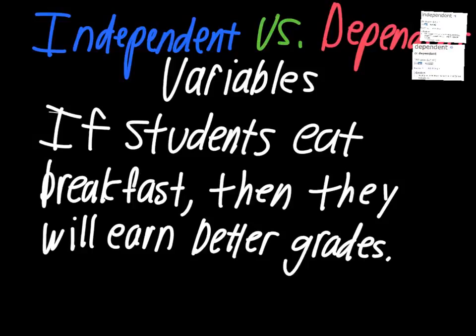If we're analyzing this one, the first part would be to take everybody in class and divide them into two groups — you either eat breakfast before school or you don't. Those are our independent variables because that's not changing. You're not going to move from one group to the next. You either ate breakfast or you didn't. That's independent — it's not going to change.